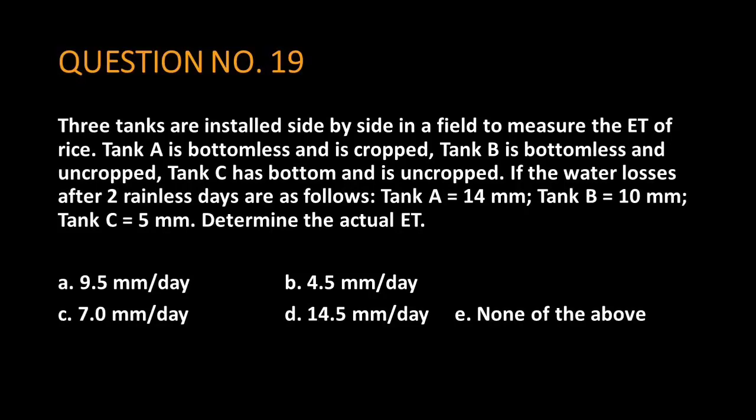Question number 19. Three tanks are installed side by side in a field to measure the evapotranspiration of rice. Tank A is bottomless and is cropped, tank B is bottomless and uncropped, tank C has bottom and is uncropped. If the water losses after two rainless days are as follows: Tank A equals 14 millimeters, tank B equals 10 millimeters, tank C equals 5 millimeters.